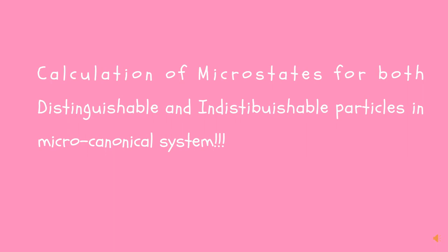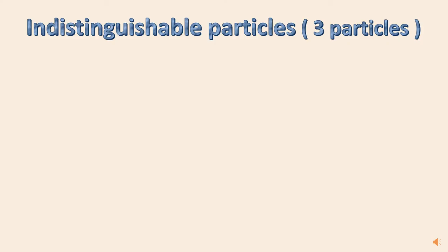Now, let us come to the calculation part. Consider a microcanonical system or NVE system with total constant energy equals to 4 epsilon with 3 particles inside it. Let them be indistinguishable in nature. The individual allowed energies then will be 0, epsilon, 2 epsilon, 3 epsilon, and 4 epsilon. Now, we have to arrange these particles in the 4 levels such that when summed up, the total energy never exceeds 4E.